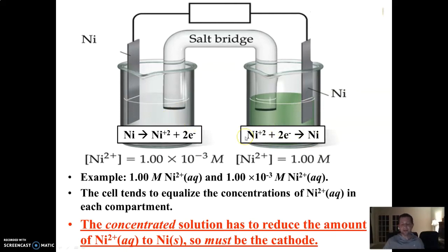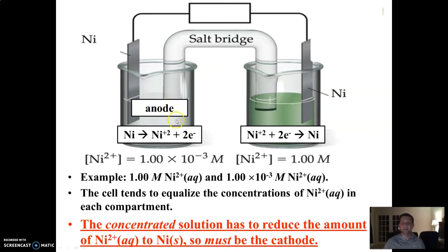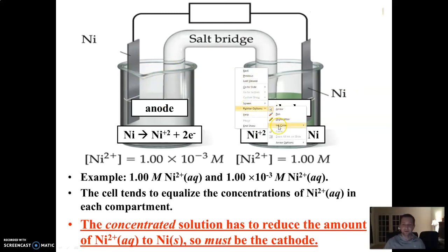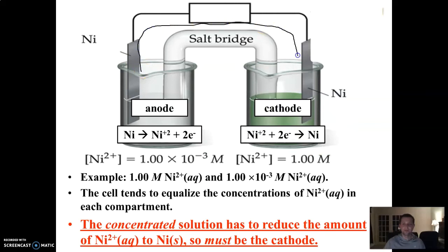Looking at both reactions: the left half cell has Ni → Ni²⁺ + 2e⁻, which is oxidation — a loss of electrons — making it the anode. The right half cell has Ni²⁺ + 2e⁻ → Ni, which is reduction, making it the cathode. Electrons flow from the anode to the cathode through the external circuit, and that gives us a voltage.